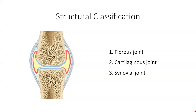The structural classification of joints is based on two criteria: the presence or absence of a space between the articulating bones called a synovial cavity, and the type of connective tissue that binds the bones together.